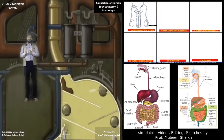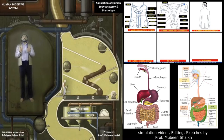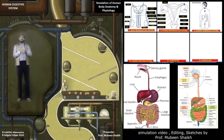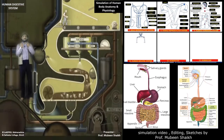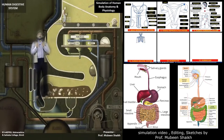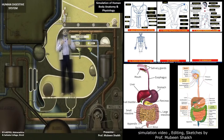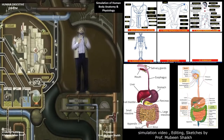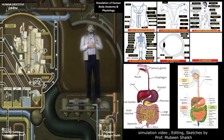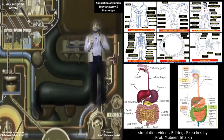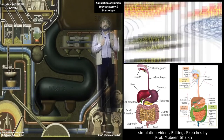In the stomach, different secretory enzymes get mixed with the food and it is converted into bolus. There is a sphincter muscle between the stomach and intestine, so when food enters the intestine it gets mixed with different enzymes, which convert proteins into amino acids, carbohydrates into monosaccharides, and lipids into fatty acids.